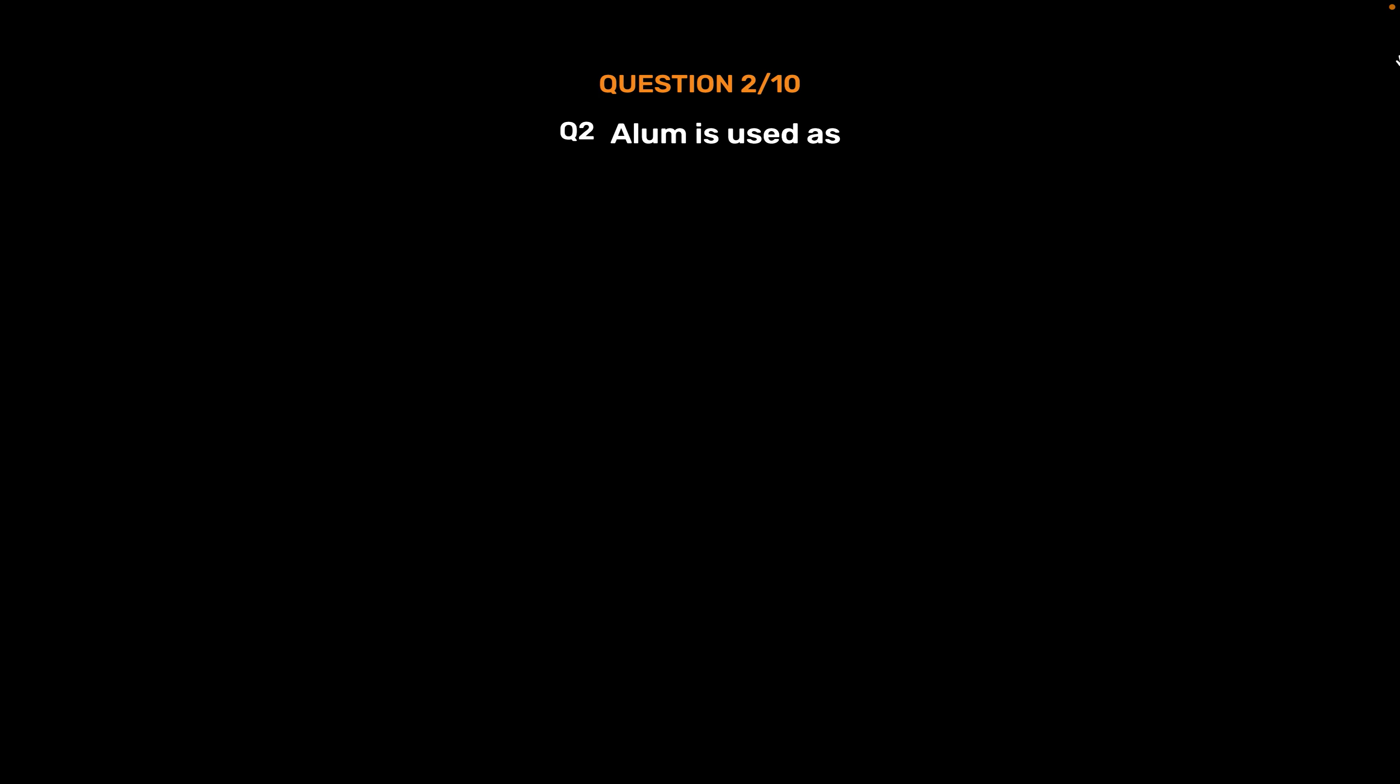Question number 2: Alum is used as. Option A: An analgesic. Option B: A fertilizer. Option C: A disinfectant. Option D: A purifier for water. The correct answer is Option D: A purifier for water.